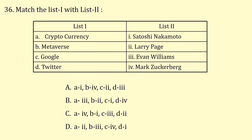Match list 1 with list 2. Cryptocurrency was founded by Satoshi Nakamoto. Metaverse founder is Mark Zuckerberg. Google was founded by Larry Page. Twitter was founded by Evan Williams. So the correct answer is option A.